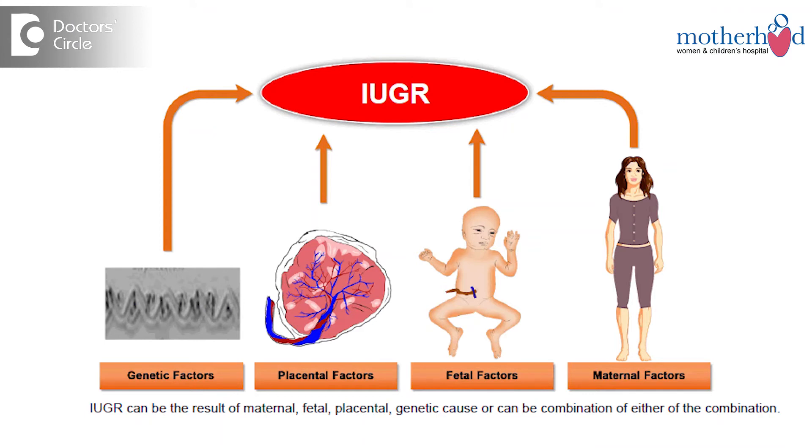Third is neonatal demise, wherein the newborn baby within a month of birth loses its life, and fourth one is severe IUGR and oligoamnios. Other than these, severe hypertension and uncontrolled severe diabetic status also play a major role in contributing to this bad event of bad obstetric history.